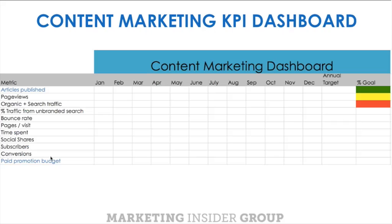Here's a dashboard that each of you can use. You can pick your own metrics. I've got a couple of reach, engagement, and conversion metrics in there. You want to look at volume of some sort — organic and search traffic, bounce rate, time spent, social shares, subscribers, and conversions. Keep in mind that the volume of articles you publish and the amount of paid promotion you put behind those articles are variables. The more you publish, the more page views you're going to get; the more paid distribution budget you have, the more page views you'll get. But always make sure you're driving engagement and conversion when looking at each of those variables.